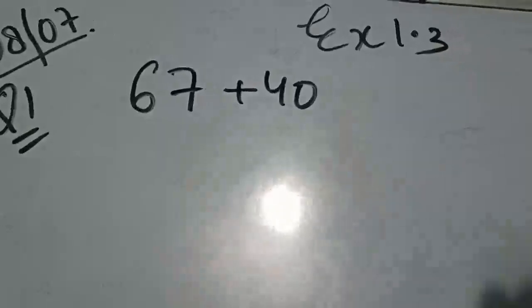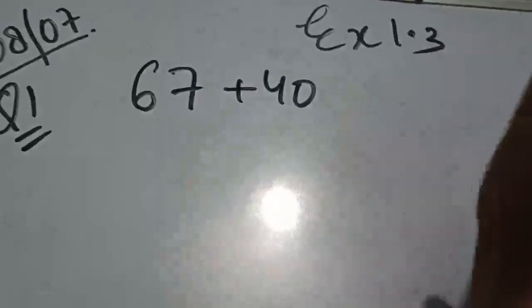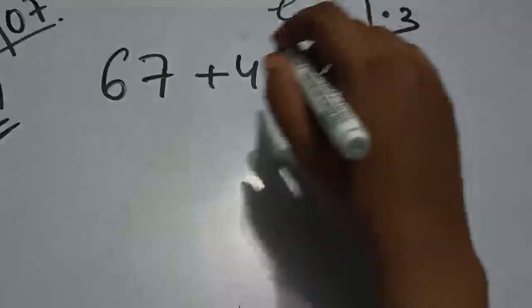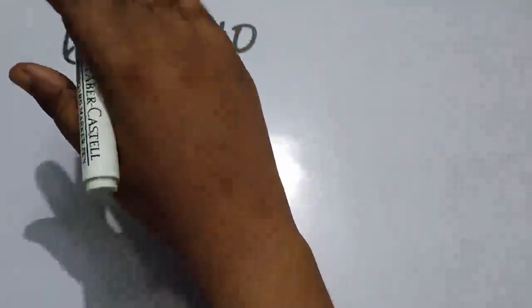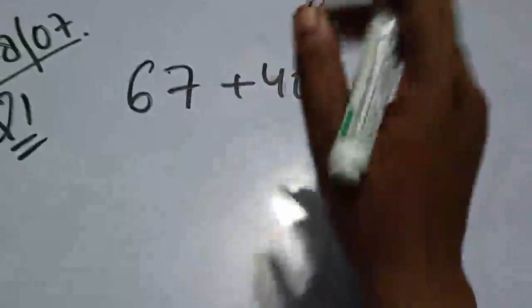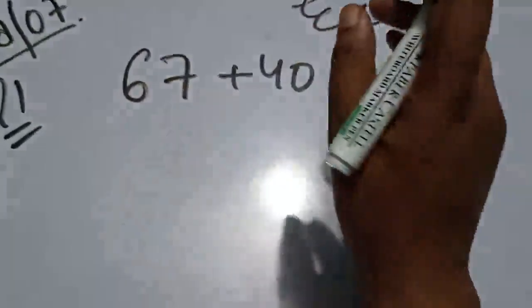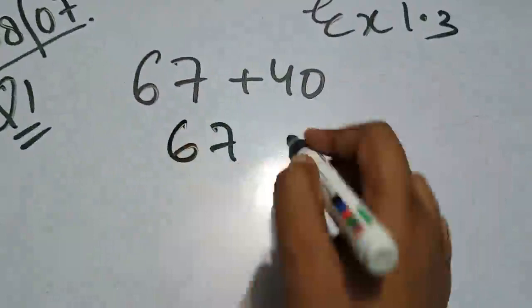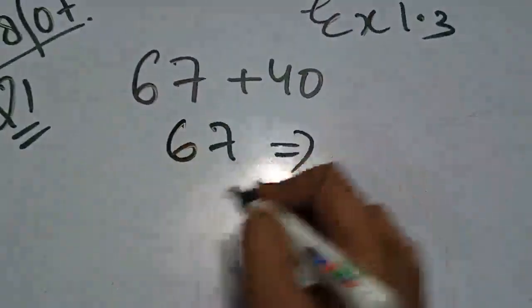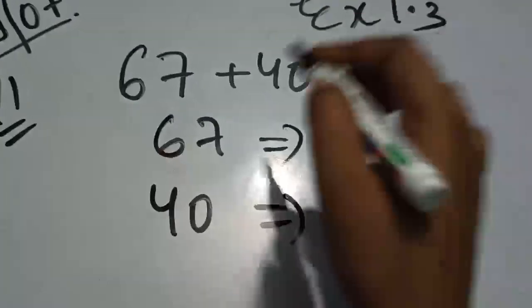Question number 1 میں estimate کرنا ہے nearest tens میں۔ پہلے ہم ہر ایک کو nearest tens میں نکالیں گے، اس کے بعد add کریں گے۔ 67 لکھا ہے — یہاں میں نے 40 لکھا۔ Done.